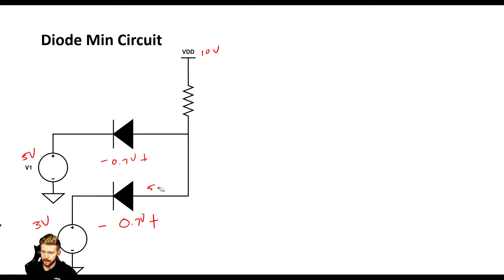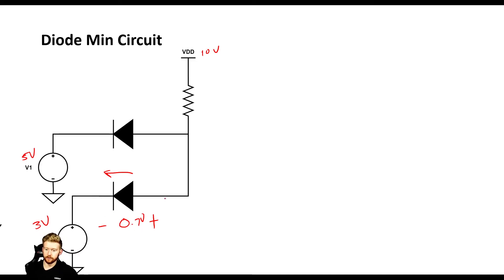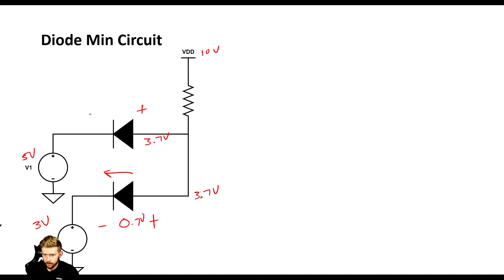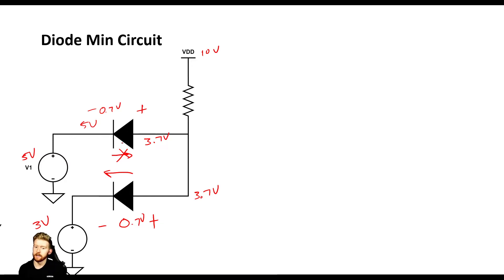Let's step back and instead assume it's the V2 (3 volt) diode that's conducting. A 0.7 volt forward drop means 3.7 volts would appear at the output node, and therefore 3.7 volts at the V1 node as well. Now with 5 volts on one side and 3.7 volts on the other side of V1's diode, current would try to push in the wrong direction — but it's blocked by that diode. So only the minimum value conducts, and these diodes help us find the minimum.